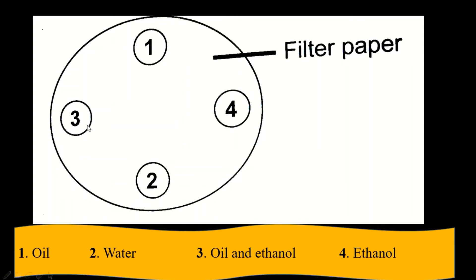At spot number three you have oil plus ethanol. Ethanol has the ability to dissolve oil, so there will be no spot left there. Your ethanol will dissolve the oil, and because ethanol is an alcohol it will evaporate and dry off, leaving no stain — unlike spot number one. At spot number four, you are only adding ethanol. Ethanol does not contain oil, and even if it did, ethanol would dissolve the oil. Your ethanol will evaporate and dry off, leaving no stain on your filter paper.